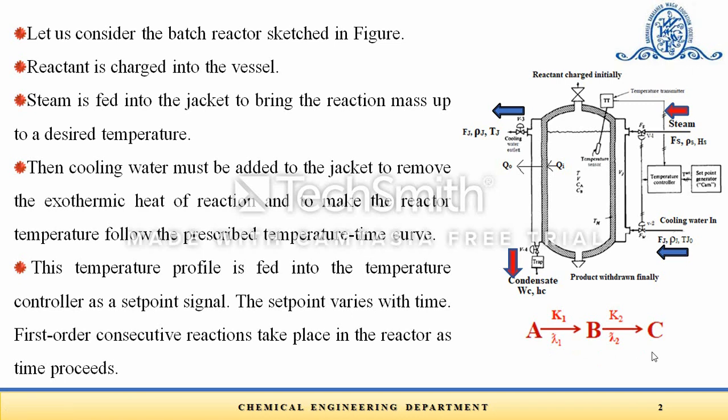The desired product is component B. If we let the reaction go too long, too much of B will react to form the undesired product C — conversion of A will be maximum but yield of desired product B will be low. On the other hand, if we stop the reaction too early, both conversion and yield will be low. So there is an optimum batch time at which we should stop the reaction, done by quenching, that is sudden cooling.